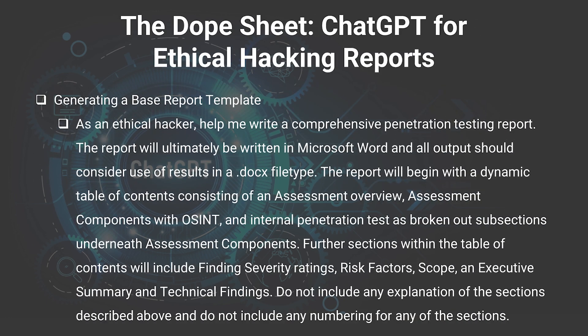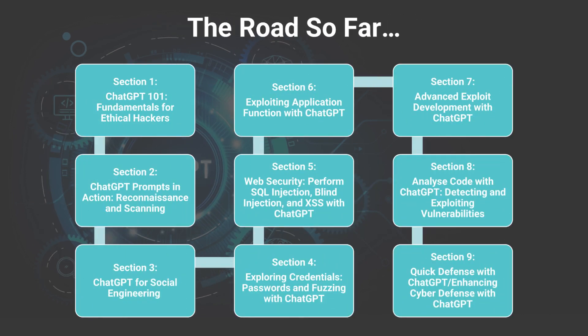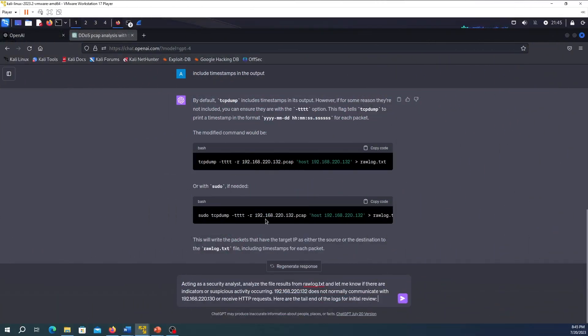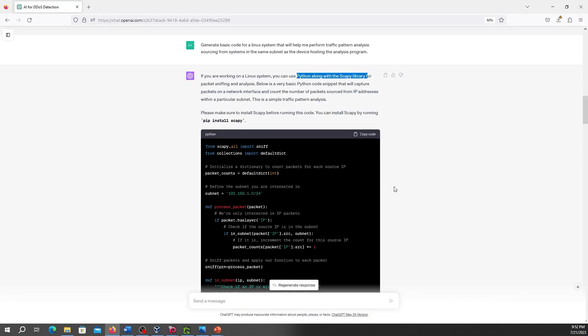As we move into the final leg of the course in part six, we will see how we can use ChatGPT to help us with reporting, streamline that effort, and help us get to a more comprehensive end result that we can communicate to our stakeholders. We'll then overview the course, and then in part seven, we'll depart a little bit from the red team side of this course and show you how we can use ChatGPT for defensive applications and how we can build triggers for anomalous activity.